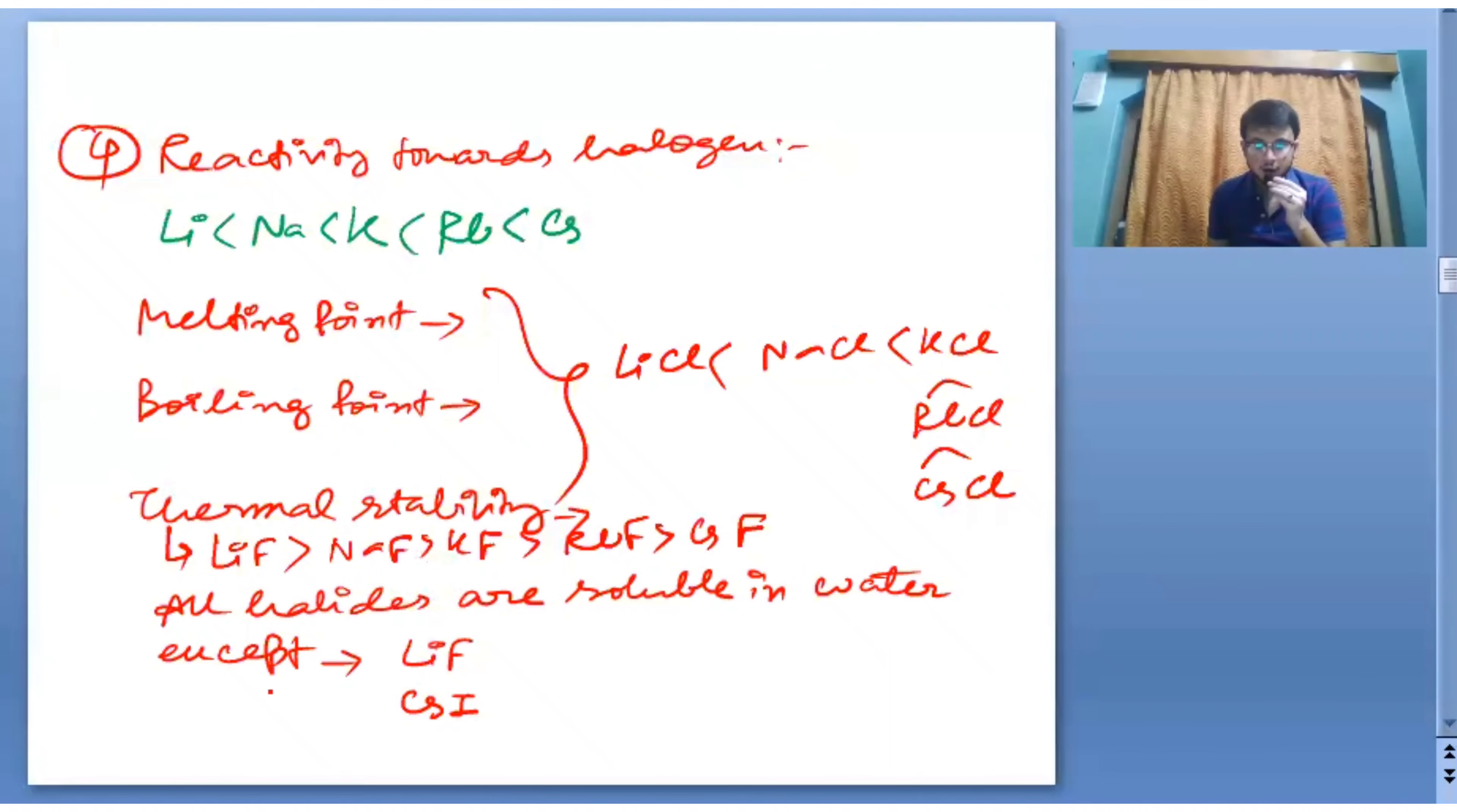But there is an exception in case of thermal stability for fluorides: LiF will be greater than NaF greater than KF greater than RbF greater than CsF. All halides are soluble in water except LiF because of its high lattice energy. CsI is also not soluble because of low hydration energy.